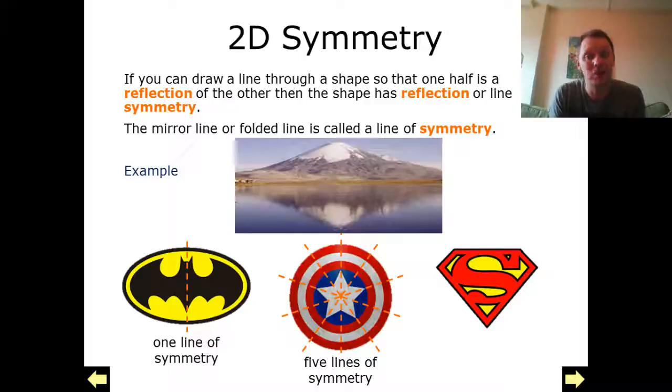And of course here we've got the Superman sign. The Superman sign has actually got no lines of symmetry because there's no line that we can draw for this where both sides will completely match up.